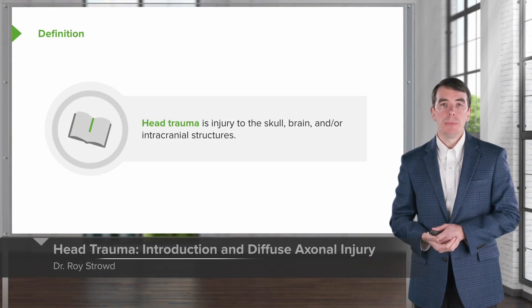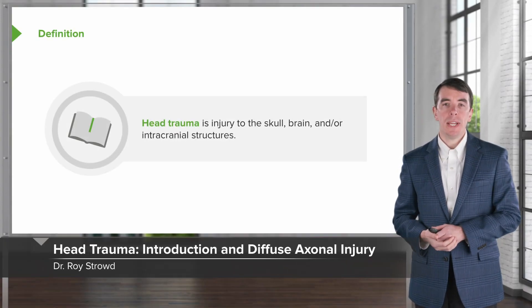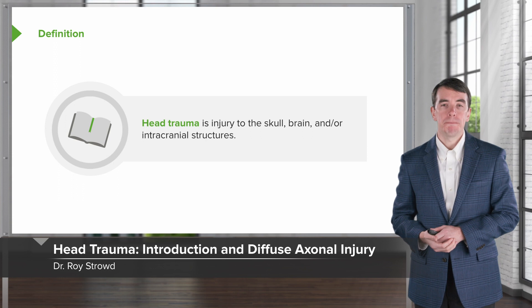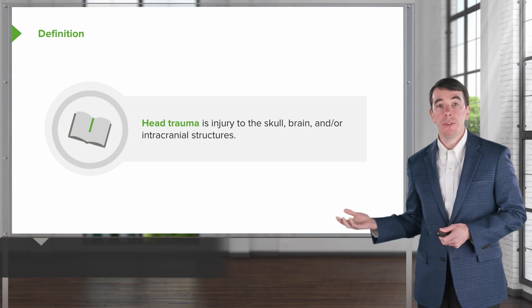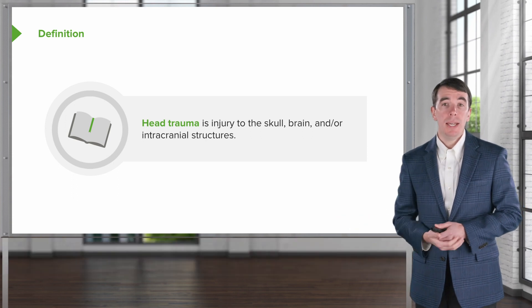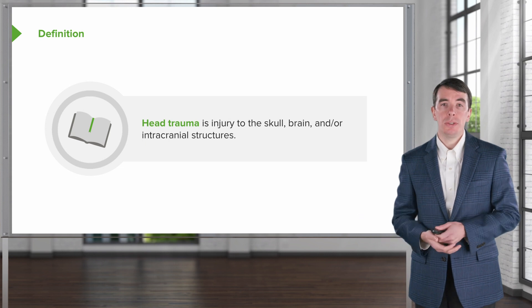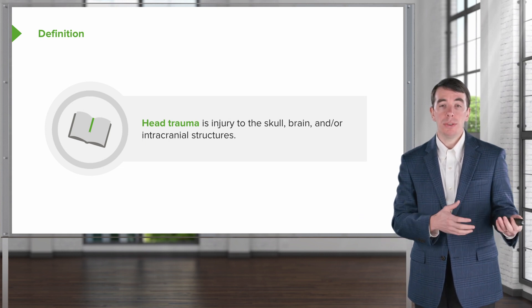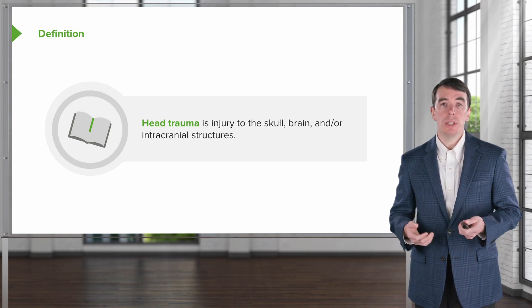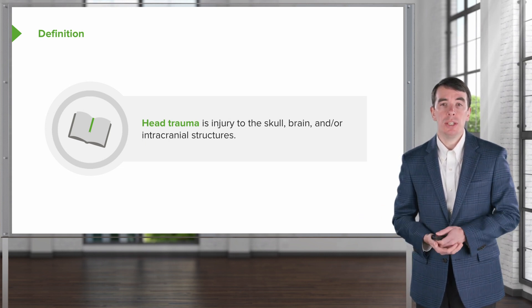Let's learn a little bit more about brain injury and head trauma, and we'll start with a definition. Head trauma is an injury to the skull, brain, and/or intracranial structures, and that may be with or without hemorrhage. It's just an injury.